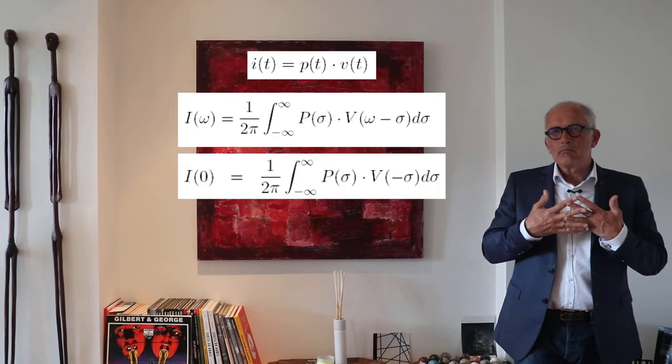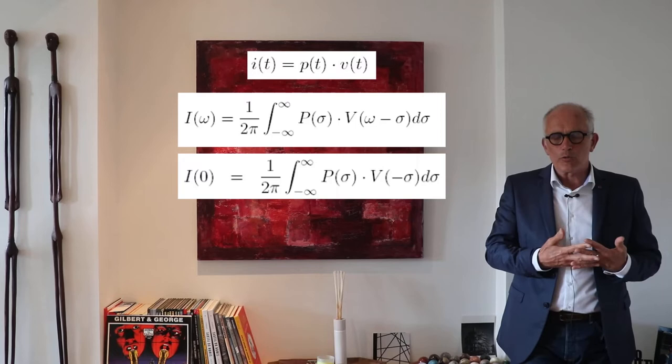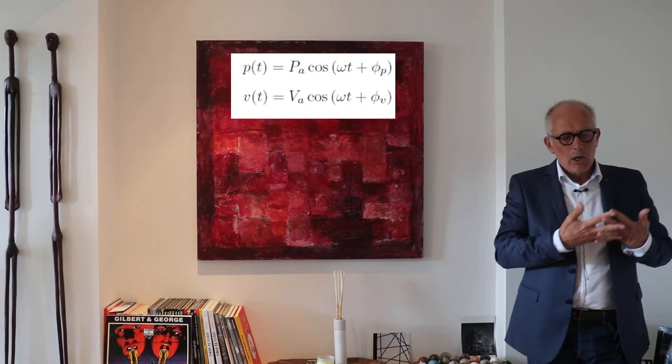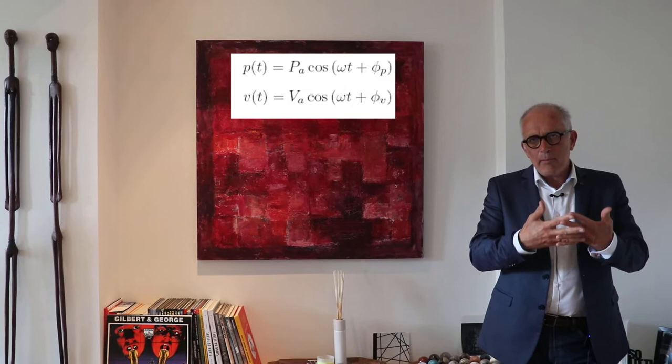I've presented here a sort of general definition based on the convolution product. But it is so important that I'd like to step back and look at a more simple example where I simply have a single frequency, a monochromatic signal at a pulsation ω.